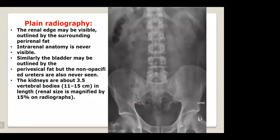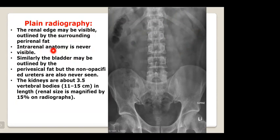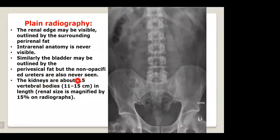For radiological investigation of the kidneys, on plain radiograph, the renal edge may be visible outlined by surrounding perirenal fat. Intrarenal anatomy is never visible on plain radiograph; similarly, the bladder may be outlined by perivesical fat but non-opacified ureters are never seen. The kidneys are about three and a half vertebral bodies in length, approximately 11 to 15 cm; renal size is magnified by plane radiograph by about 15 percent compared to ultrasound.